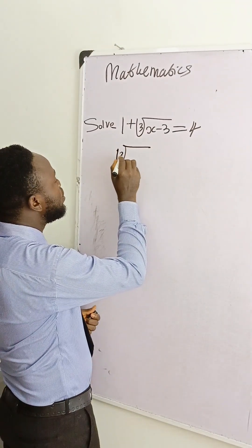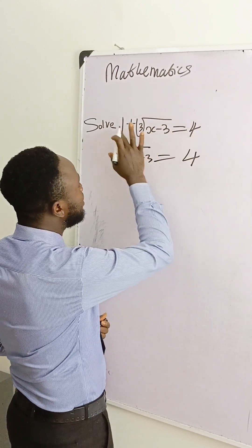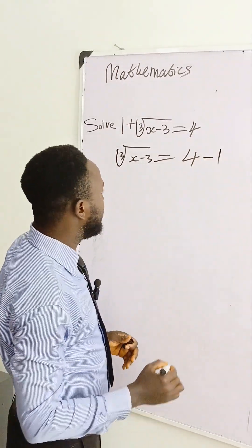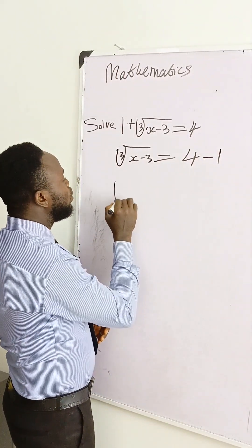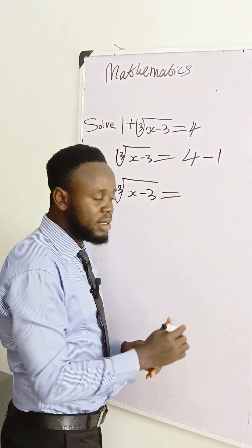Now cube root of x minus 3 is equal to 4. If we carry one to this side, because we have plus here it will be minus, so we have minus 1.